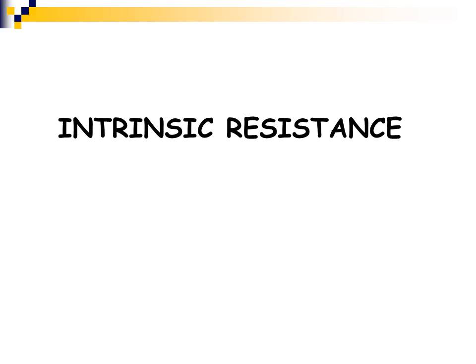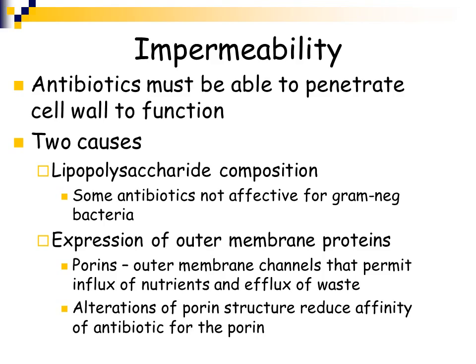We'll first talk about intrinsic resistance. Impermeability is one method of intrinsic resistance. Antibiotics have to be able to penetrate the cell wall in order for them to function. Some organisms are impermeable based on their lipopolysaccharide composition. For example, some antibiotics are only effective for gram-positive organisms and not for gram-negative organisms, and that's based on the lipopolysaccharide composition.